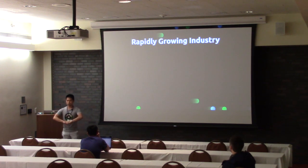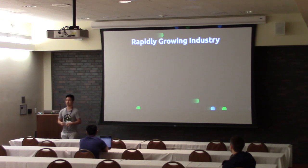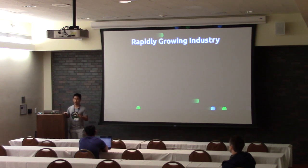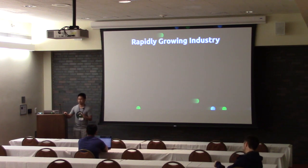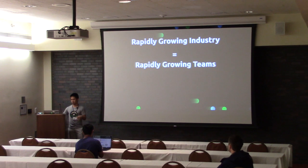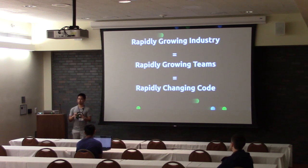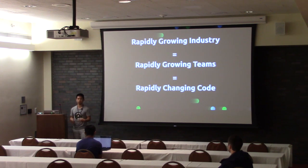As you all know, the IT industry and software in general is booming. Tons of startups are popping up all over the place. Y Combinator this summer had some 24,000 startups participating in their startup school. Companies are popping up everywhere, and big corporations are all doing huge IT and tech transformation. What a rapidly growing industry means is rapidly growing teams, and with rapidly growing teams, you've got rapidly changing code. This is problematic because with constantly changing code, it gets harder to track, maintain, and merge changes.